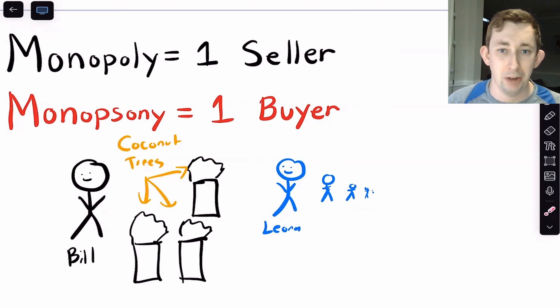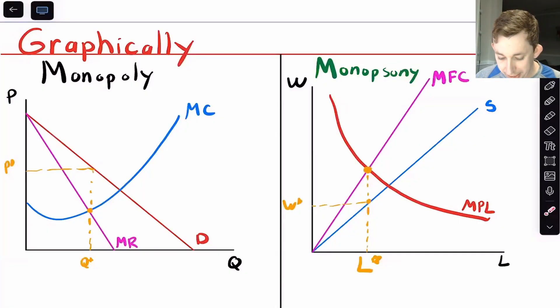As a quick recap, in monopoly we have a demand curve and a marginal revenue curve below the demand curve. We set marginal revenue equal to marginal cost. The market power aspect is how we can charge a higher price than marginal cost or marginal revenue. That's how we got our P star and Q star. It's going to be a very similar story when we talk about monopsony.